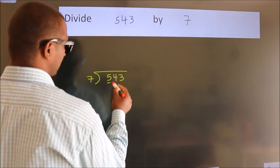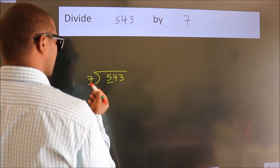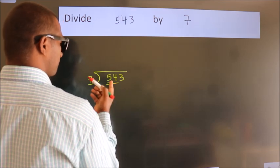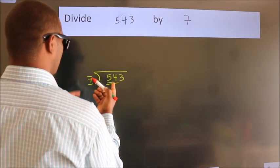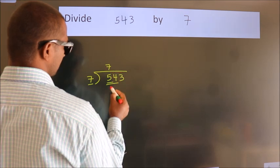Here we have 5. Here 7. 5 is smaller than 7, so we should take two numbers: 54. A number close to 54 in the 7 table is 7 sevens, which is 49.